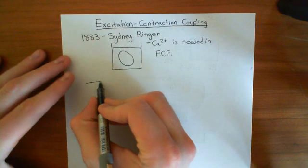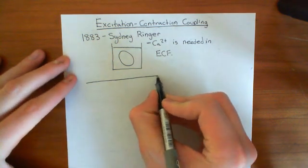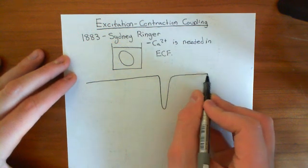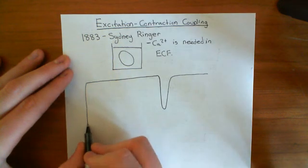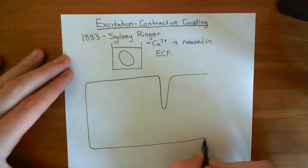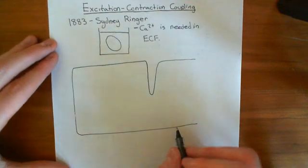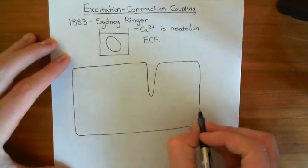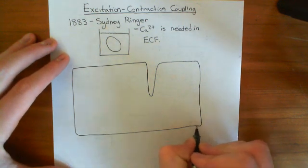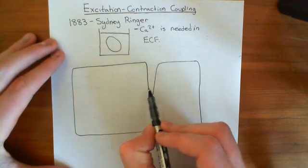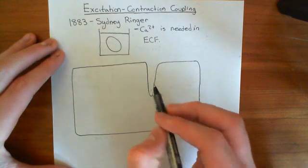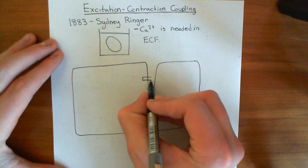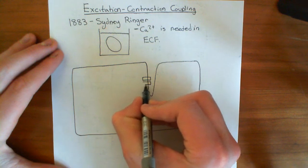So let's say we have a cardiac myocyte. Cardiac myocytes, just like skeletal muscle cells, have T-tubules in their membranes — indentations of the cell membrane which allow it to come into contact with the depths of the cytoplasm. When an action potential propagates along the cell membrane of a cardiac myocyte, it will propagate down the T-tubule and activate dihydropyridine receptors in the cell membrane.